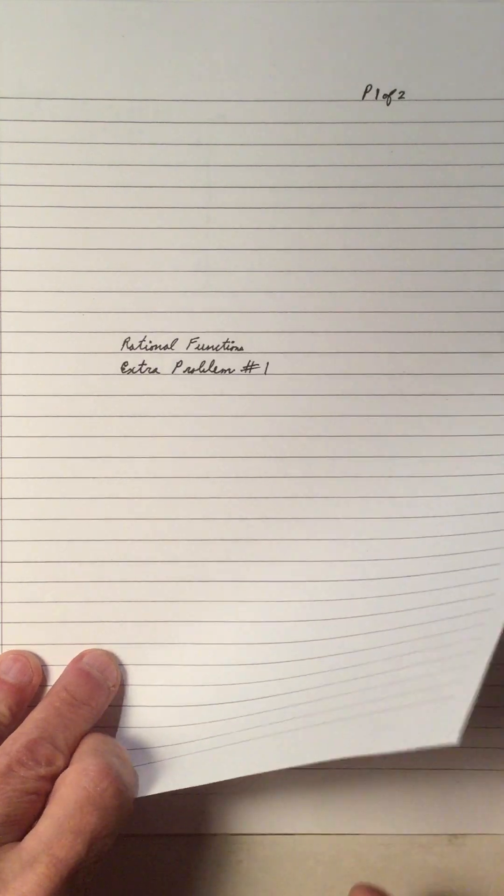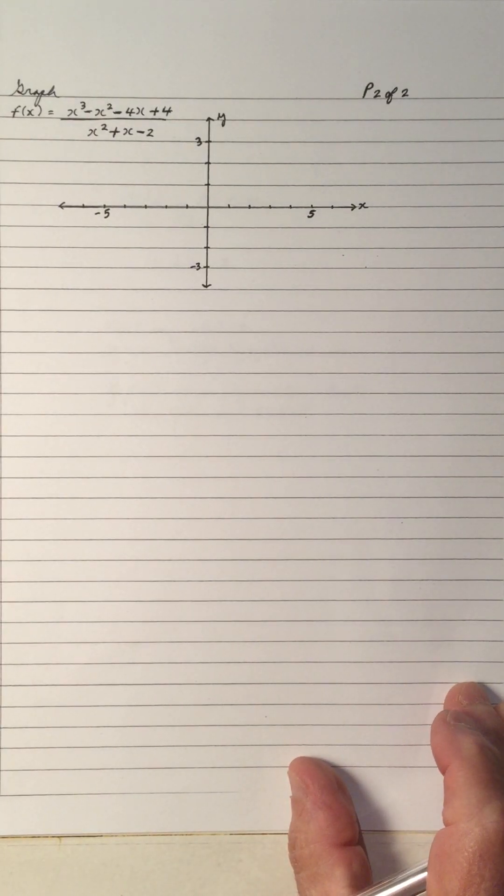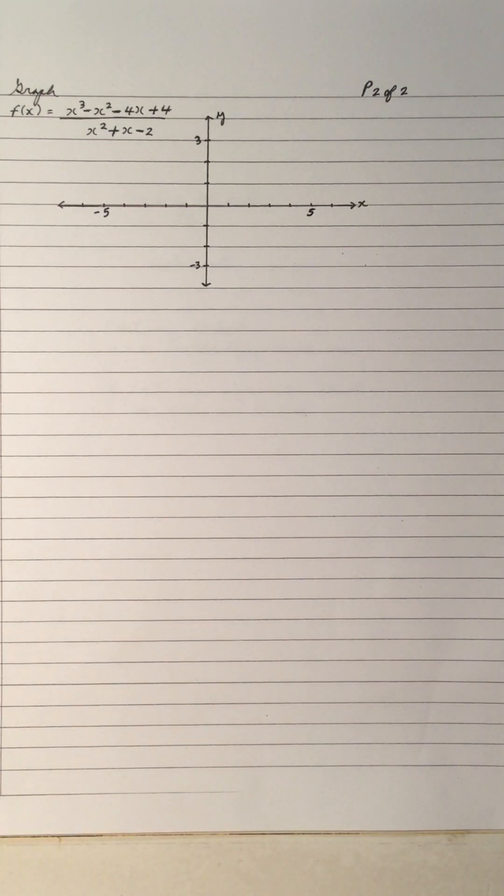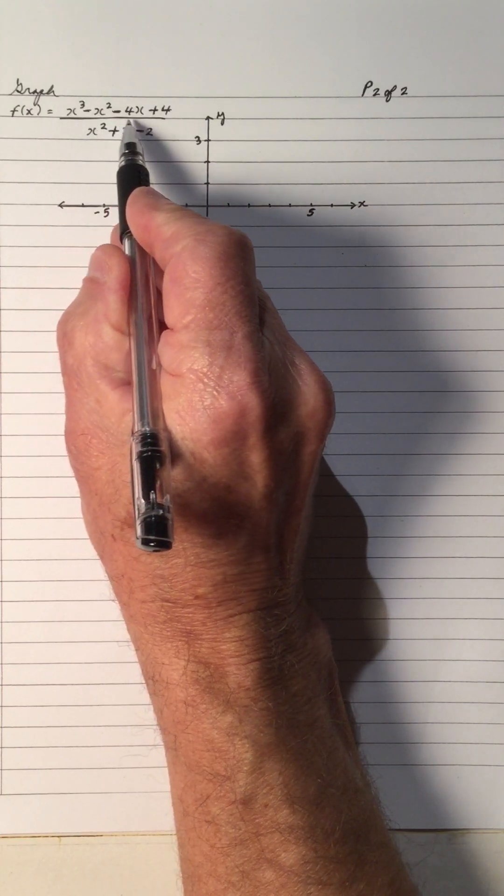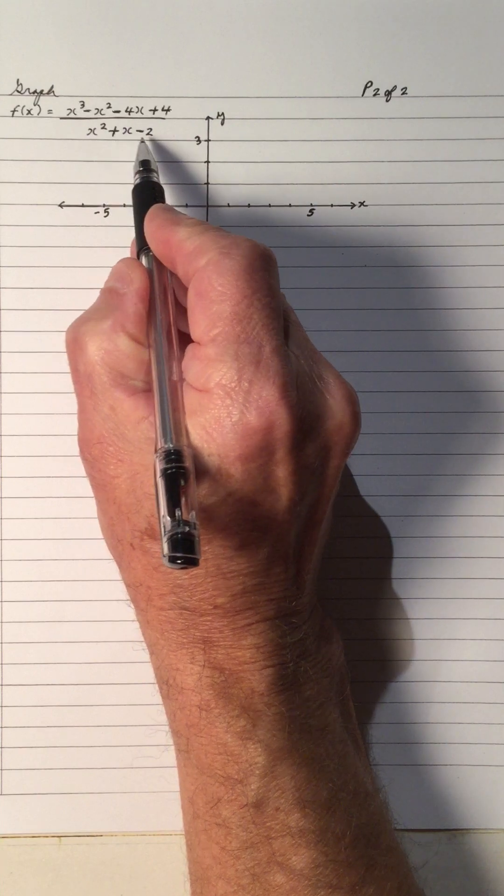Hi, welcome to my video on rational functions, extra problem number one. So I wanted to make up a different problem, so I thought about it, and I made up this one: f of x equals x cubed minus x squared minus 4x plus 4 divided by x squared plus x minus 2.